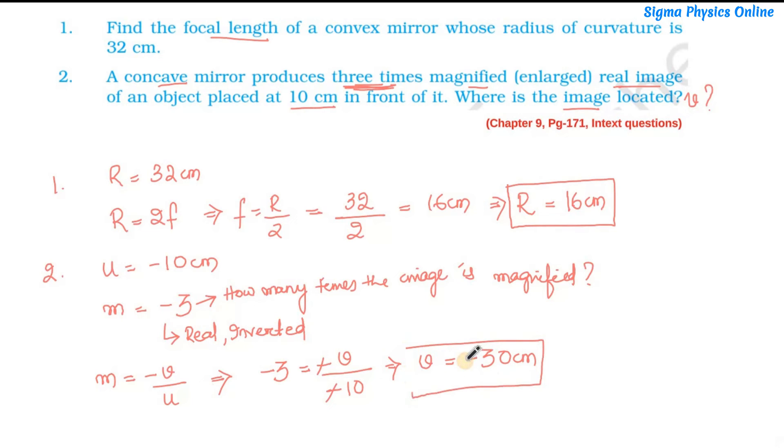The image is located at a distance of 30 centimeters in front of the mirror. The negative sign indicates that to measure the image distance we have to go towards the left from the pole, against the direction of light. To summarize, the image is located at a distance of 30 centimeters in front of the mirror.